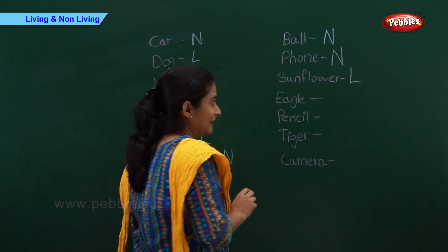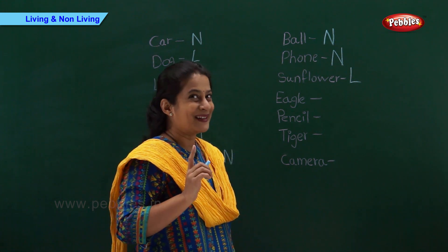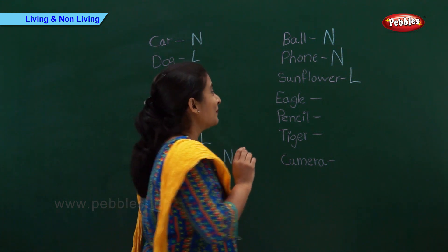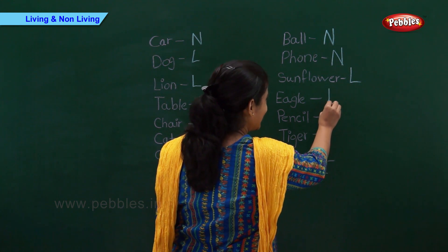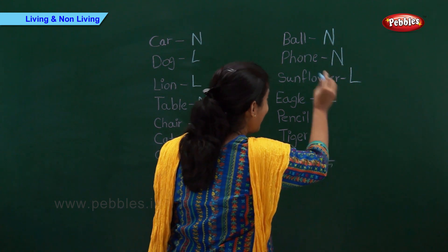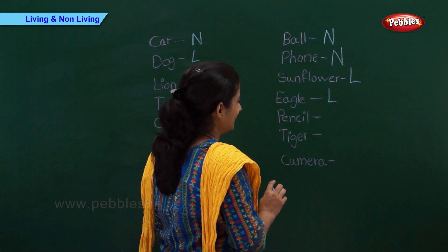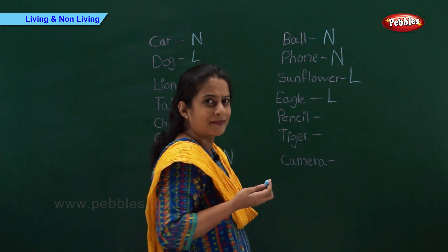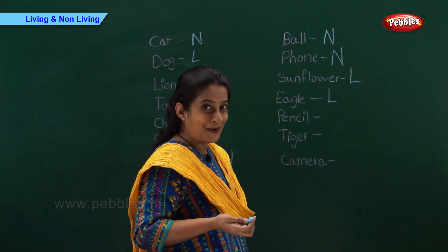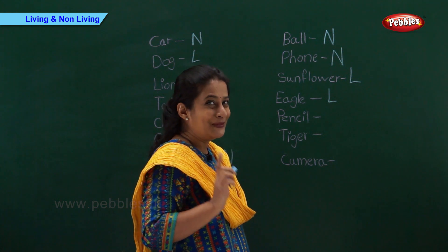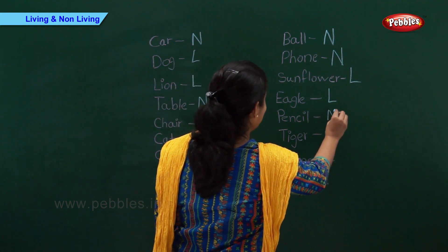Eagle. Can an eagle breathe? Right. So eagle is a living thing. Let's write L. Now we have pencil. Can a pencil move or does it grow? No. So let's write N.